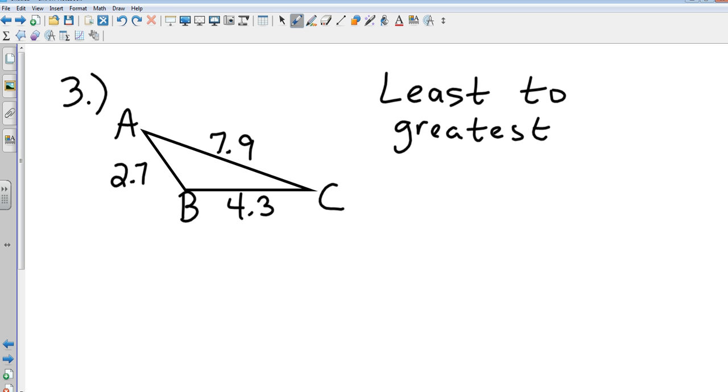Least to greatest. The smallest angle is angle C. Which is the second one? Angle A. And then obviously the last one is angle B. Angle C, angle A, angle B in that order.